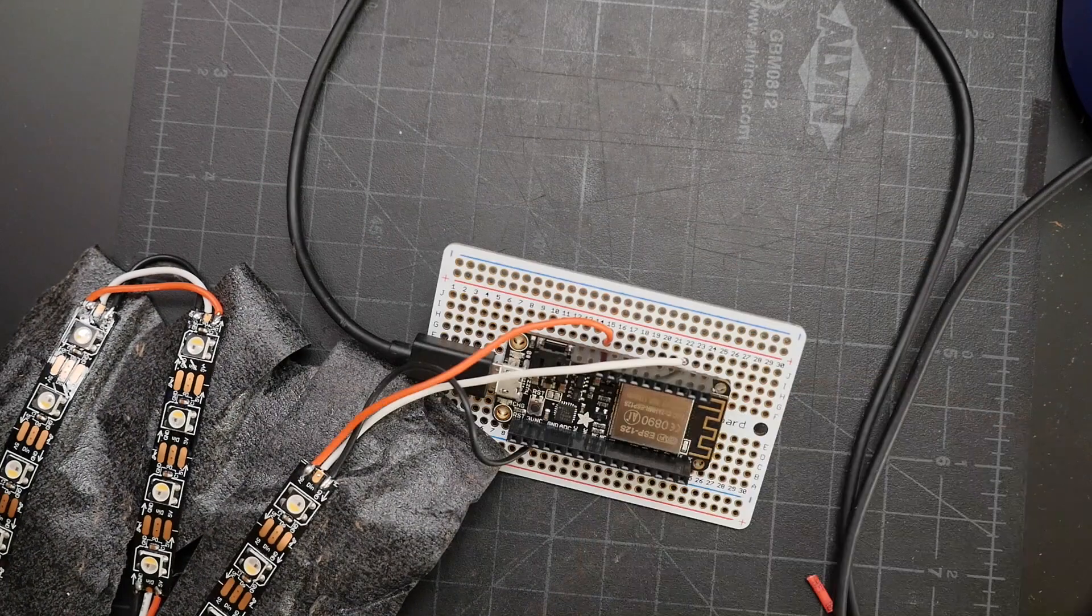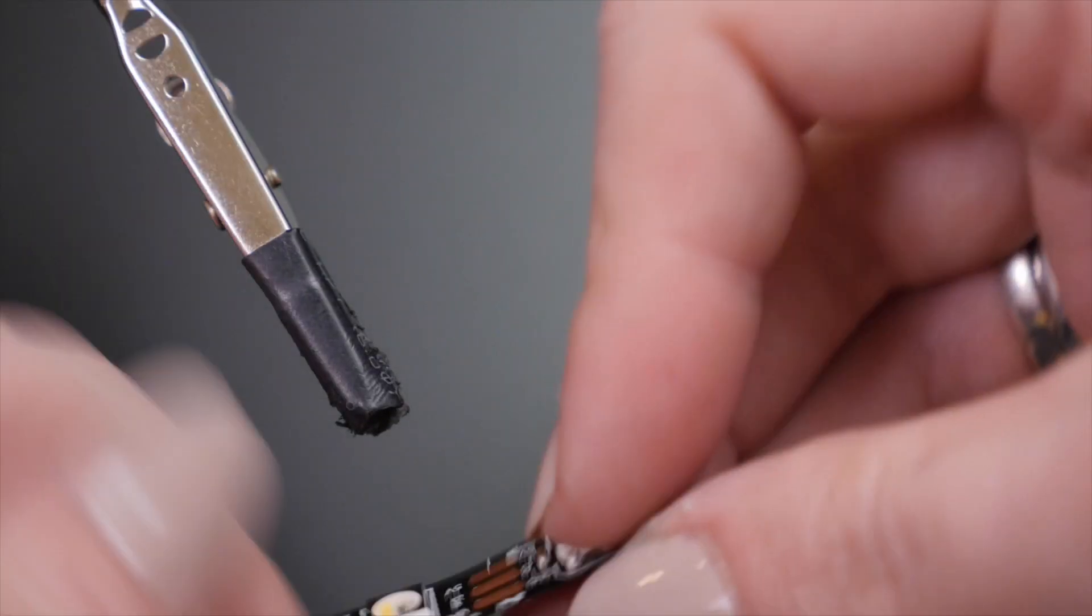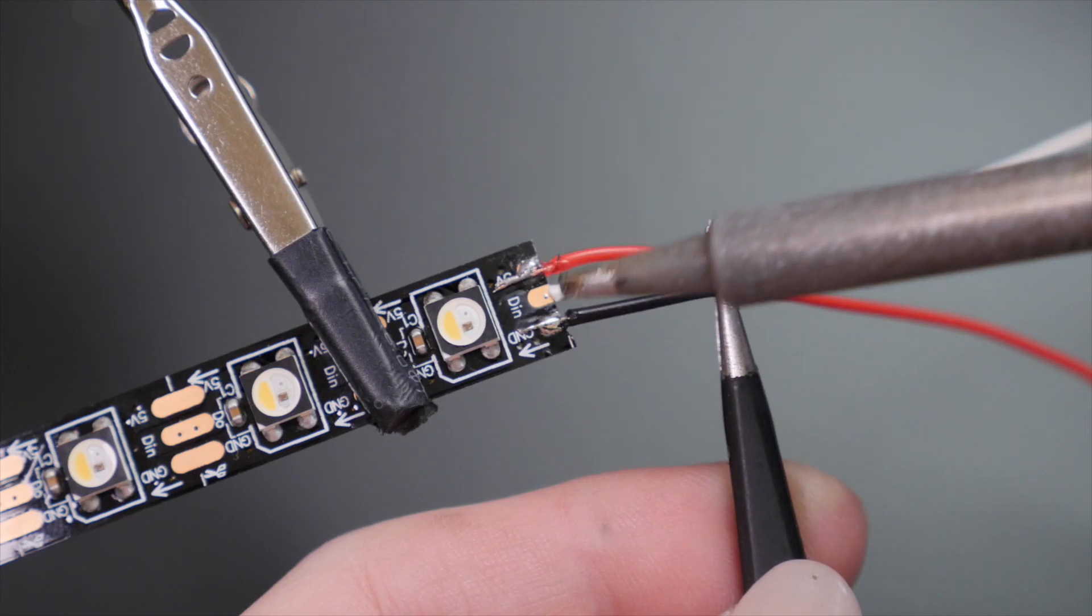The tip I always give about soldering wires to these strips is to alternate sides, that way your potentially messy solder connections have a bit more elbow room.